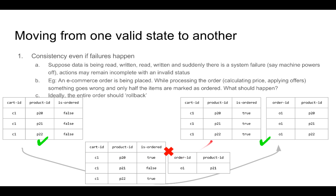This is an example of where we need some kind of atomicity to ensure that the database is in a valid state. By atomicity we mean that we should have an all-or-none kind of situation where either the entire set of operations happen or they do not happen at all.